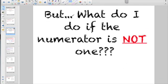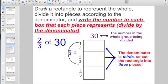But what do I do if the numerator is not one? Most of the time, the book is going to say draw a diagram or draw a picture, which basically they want you to draw a rectangle to represent the whole. Divide it into pieces according to the denominator.